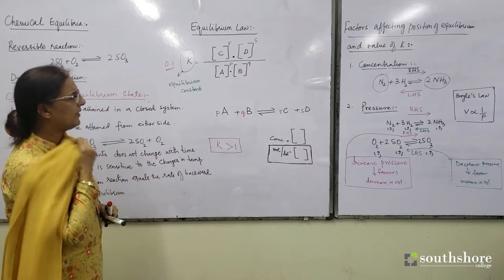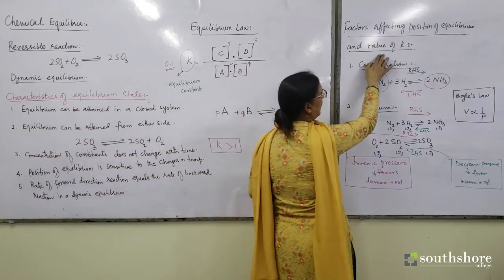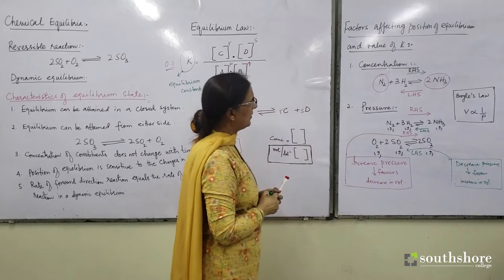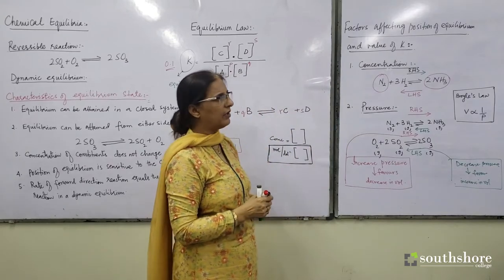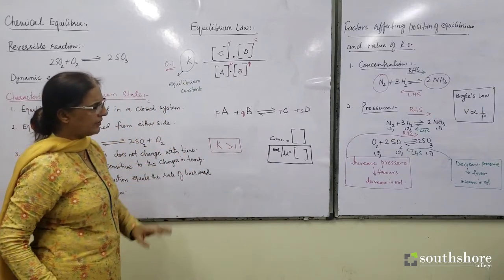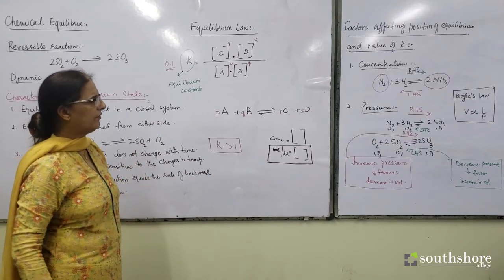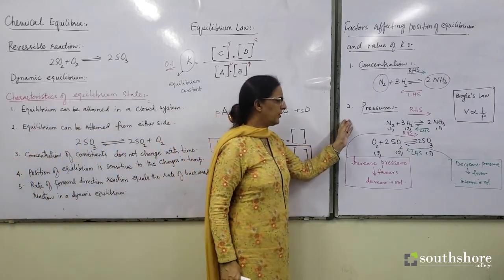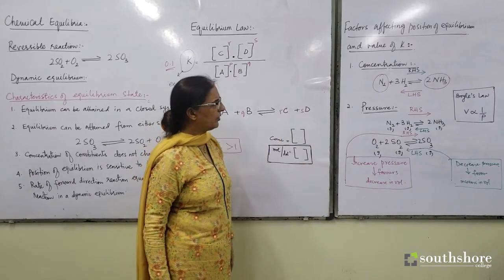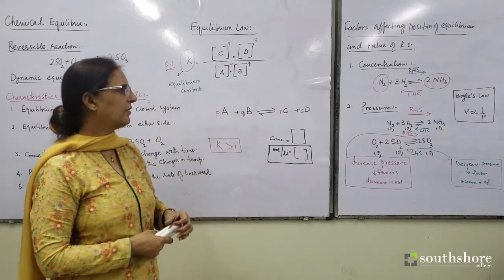Position of equilibrium is being affected by both concentration and pressure — but I have not yet talked about the value of K. Changing concentration has no effect on the value of K; value of K will remain the same. Concentration only affects position of equilibrium. When you look at pressure, pressure also does not affect the value of K — it is going to affect only position of equilibrium, shifting it left or right, but it will not affect the value of K.